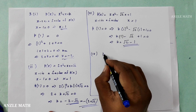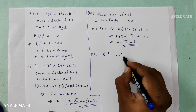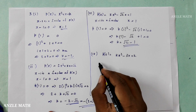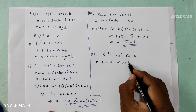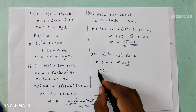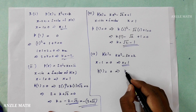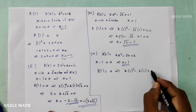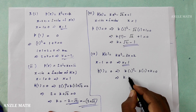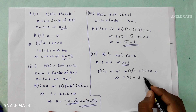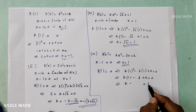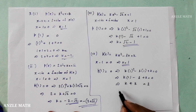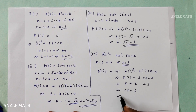Question 4: p of x is equal to k x squared minus 3x plus k. x minus 1 is a factor. So x minus 1 equals 0, x equals 1. P of 1 equals 0. So k into 1 squared minus 3 into 1 plus k equals 0, which gives k minus 3 plus k equals 0, so 2k equals 3, therefore k equals 3 over 2.